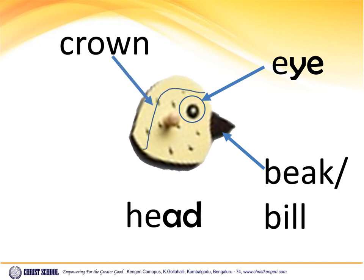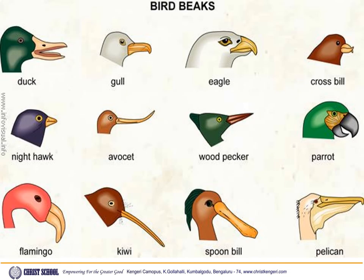Crown. Birds have all kinds of beaks — different sizes, different shapes — depending on how they use them. Look at the beak of a duck, seagull, eagle, crossbill, nighthawk, avocet, woodpecker, parrot, flamingo, kiwi, spoonbill, pelican. All have different shapes, different sizes, and different colors of beaks.